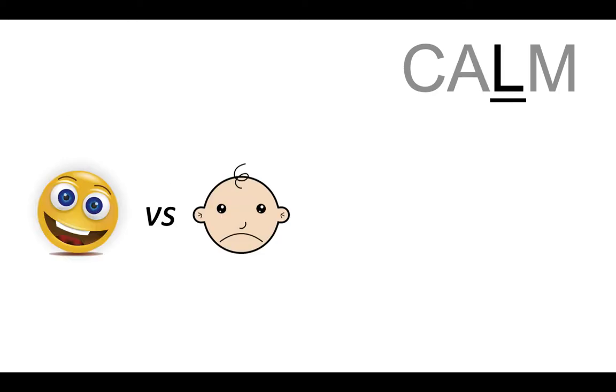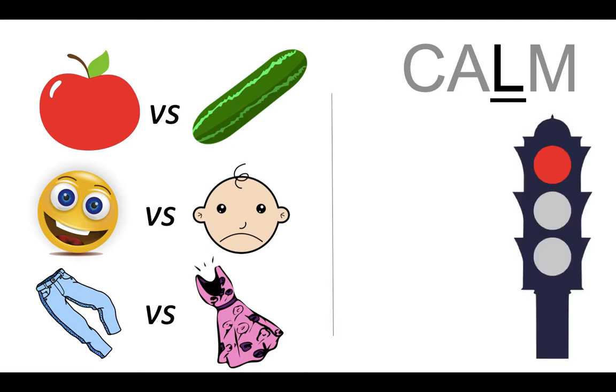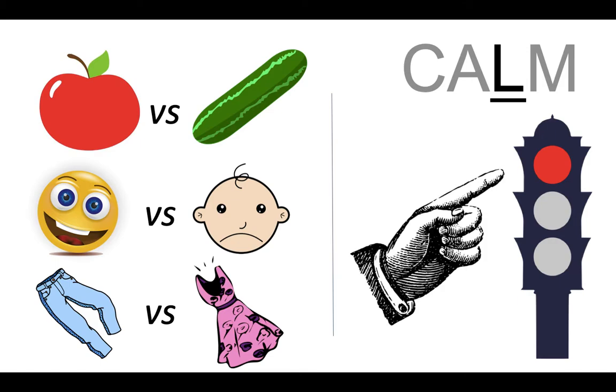The letter L stands for letting the child express itself. You can do this by using the feeling pictures we talked about before. Offer choices and avoid saying no if possible. But of course, if your child wants to cross the road at a red light or some other dangerous thing, you must say no.